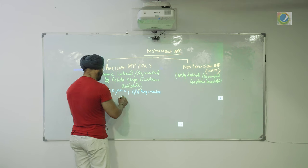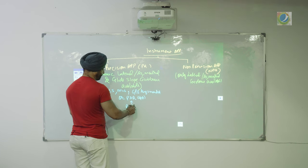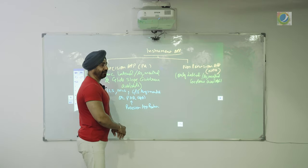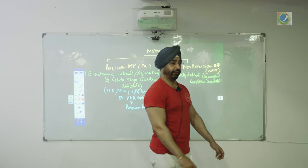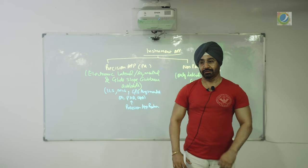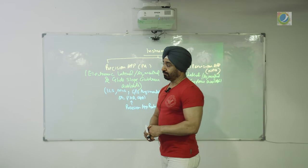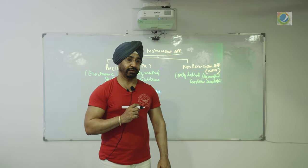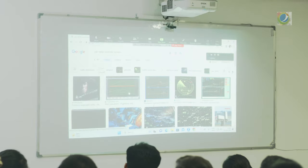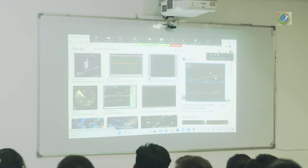In India we do not use PAR approaches — Precision Approach Radar. PAR is used in many countries; in India it is used only in air force military bases. The controller sits with two screens — electronic glide slope is available to the controller. It is a broadcast-type approach where the controller continuously guides you till your minima. It is very accurate; the controller guides you all the way down to the runway.